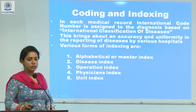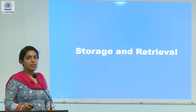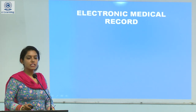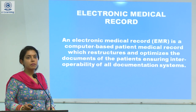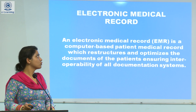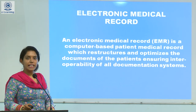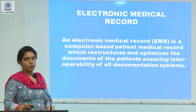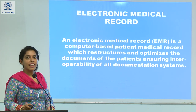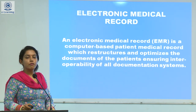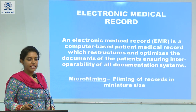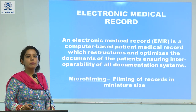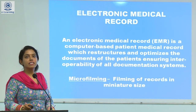Next, we move towards storage and retrieval. We basically store data in three forms. First, we have the manual form, and then we have the electronic medical record. Electronic medical record is a computer-based patient medical record which restructures and optimizes the interoperability of the document system for all patients, ensuring all documentation. Next, we have microfilming, that is filming of the records in miniature form.